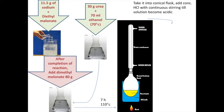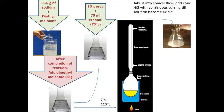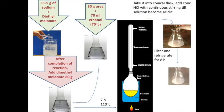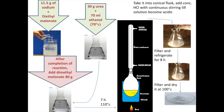After refluxing for seven hours, a white solid mass is obtained and separated. Treat it with acid to make the solution acidic, then place it in a refrigerator overnight. Filter the solid using filter paper or a vacuum pump, wash with cold water, drain, and then dry the mixture at 100 degrees Celsius for four hours to obtain barbituric acid.